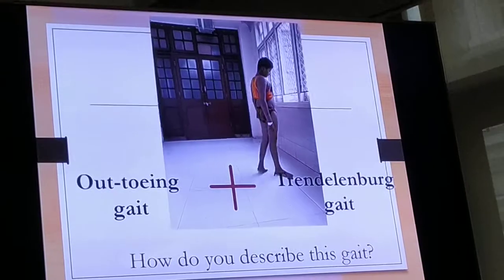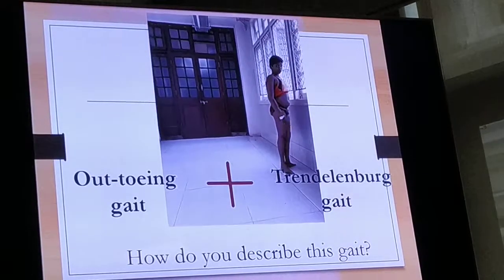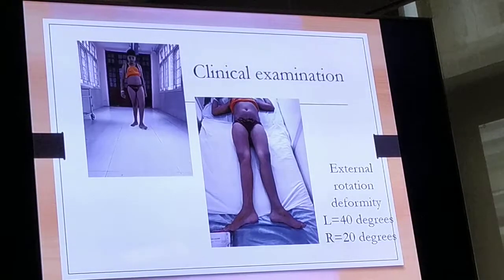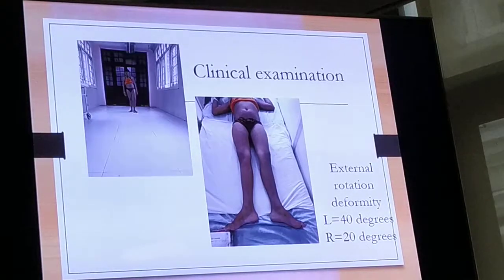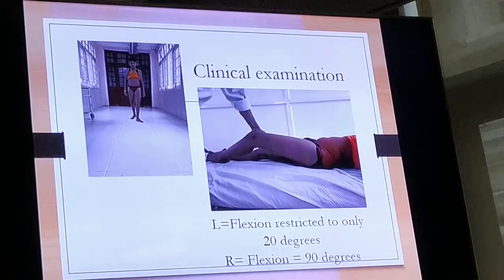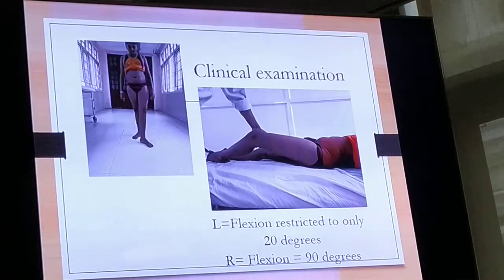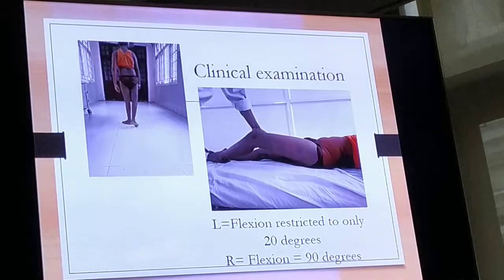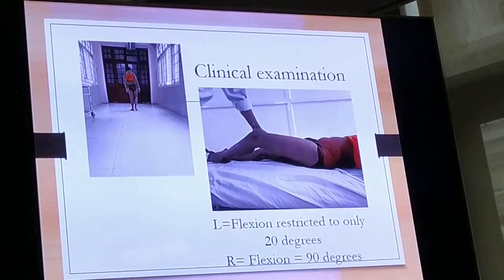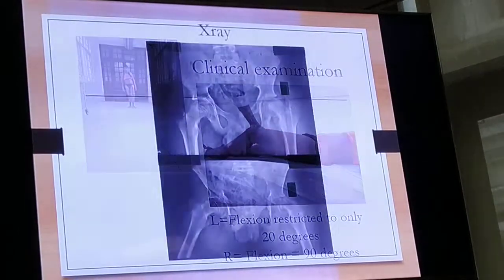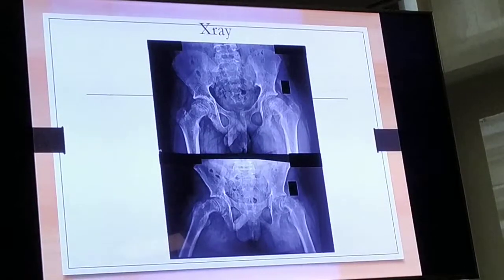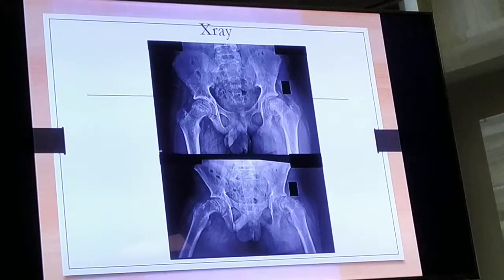This is an out-toeing gait with a Trendelenburg gait. On clinical examination, there is an external rotation deformity which is more on the left side. Flexion is restricted to only about 20 degrees on the left side, and the right is barely able to flex about 80 to 90 degrees. This is borne out by the X-ray findings — on the left side it is a very severe slip.